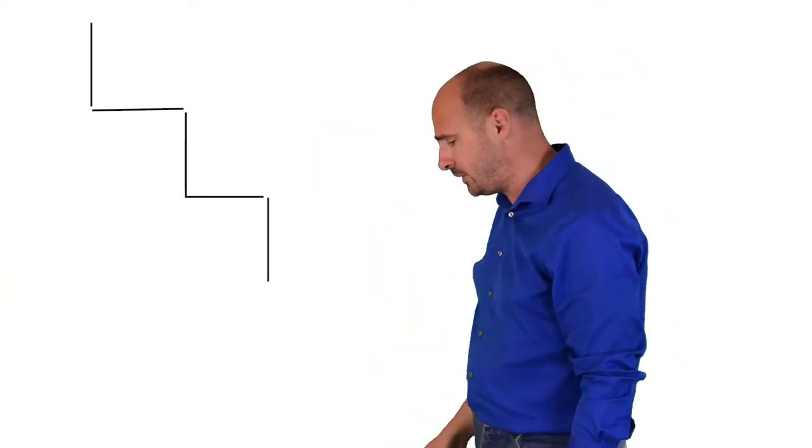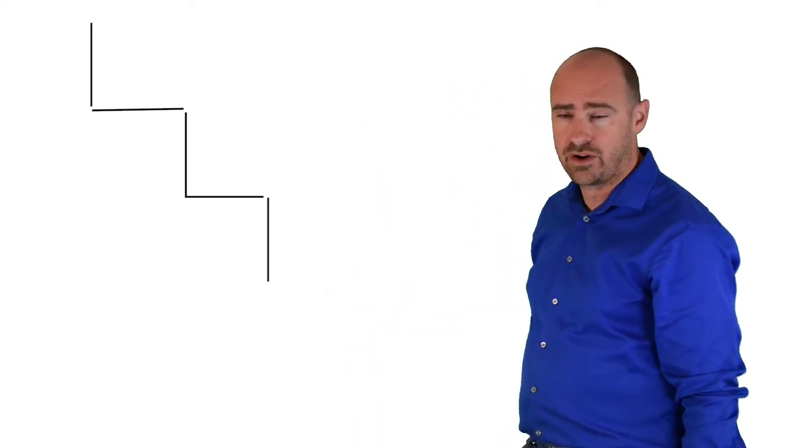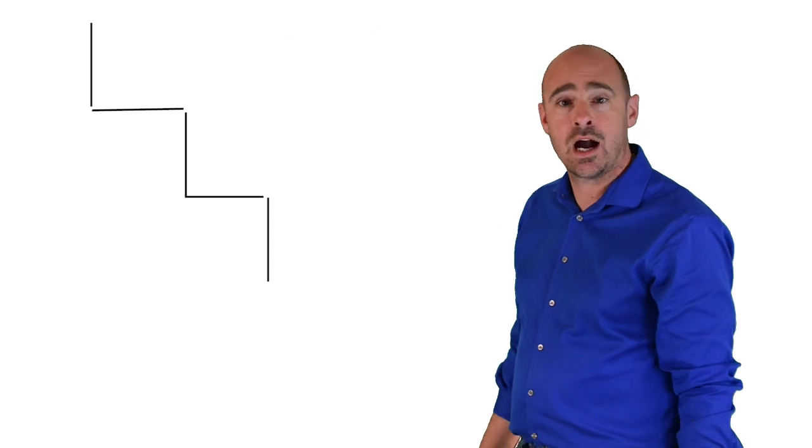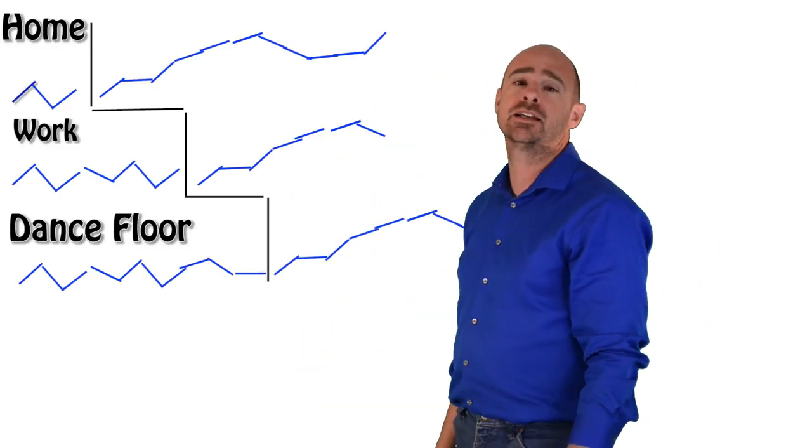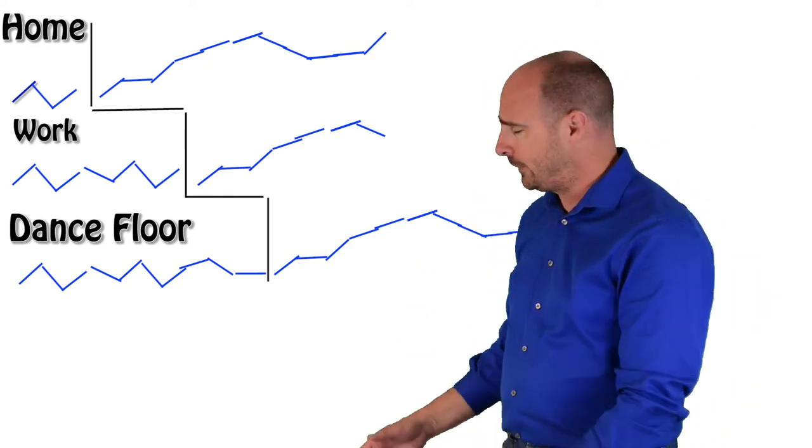Then the next magical design type here that we have would be an intervention across settings. So one person, multiple environments, multiple settings, same logic. Everything applies. So we've got Tox at home, we've got Tox at work, and we've got Tox on the dance floor. And I tell you, if we're trying to reduce swearing behavior, then this is what we would do.